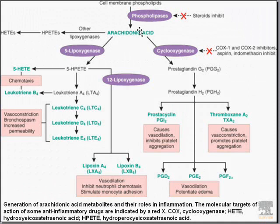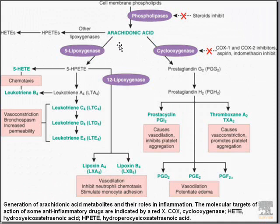You have arachidonic acid, which is formed by the action of enzymes called phospholipases from the breakdown of cell membranes. Steroids inhibit this process by inhibiting the formation of arachidonic acid by phospholipases. Once you have arachidonic acid, you have its derivatives — basically four groups. There are leukotrienes and lipoxins, which require the action of lipoxygenases to form from arachidonic acid.